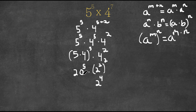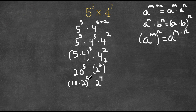And I'm going to rewrite 20 as 10 times 2. So we have 10 times 2 to the power of 5 times 2 to the power of 4.